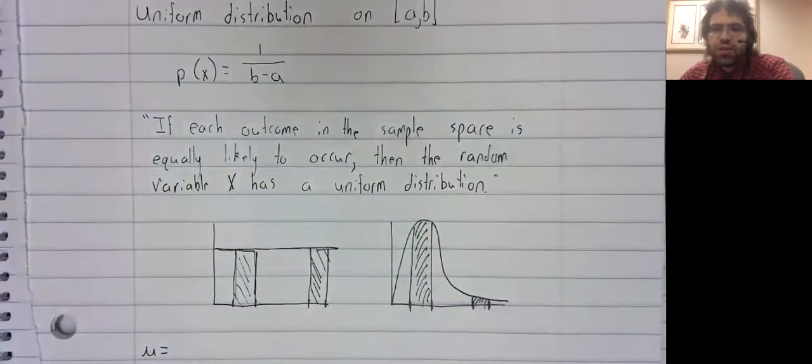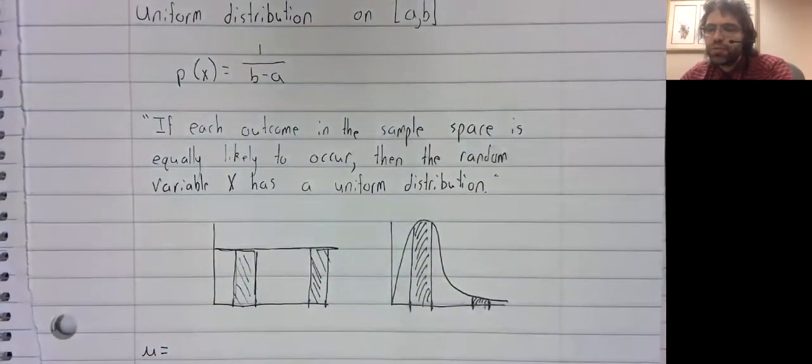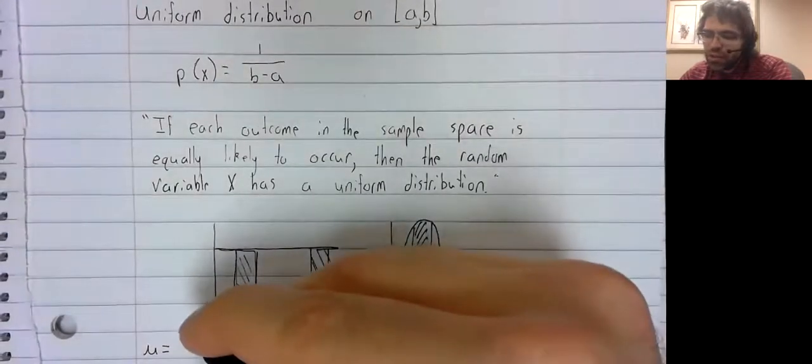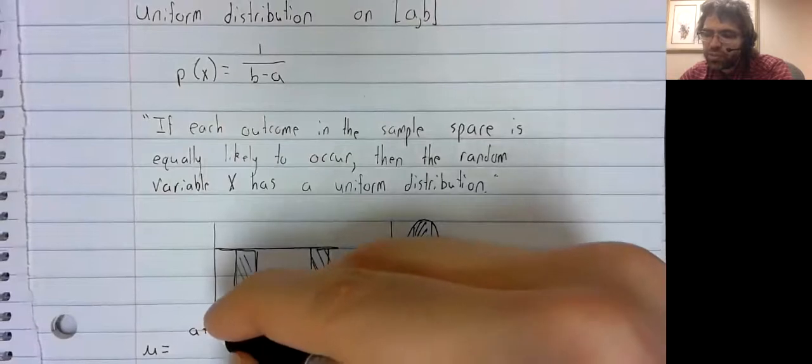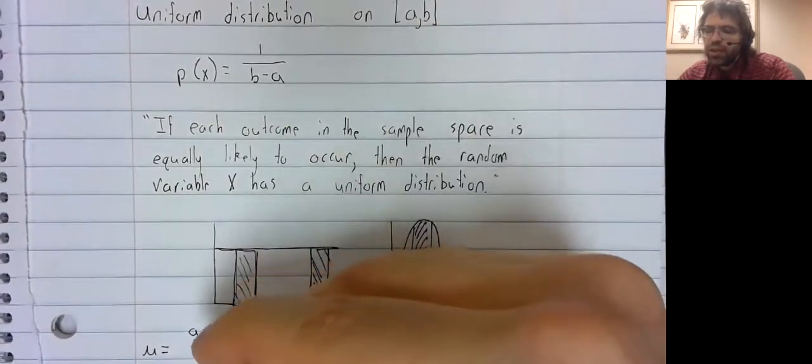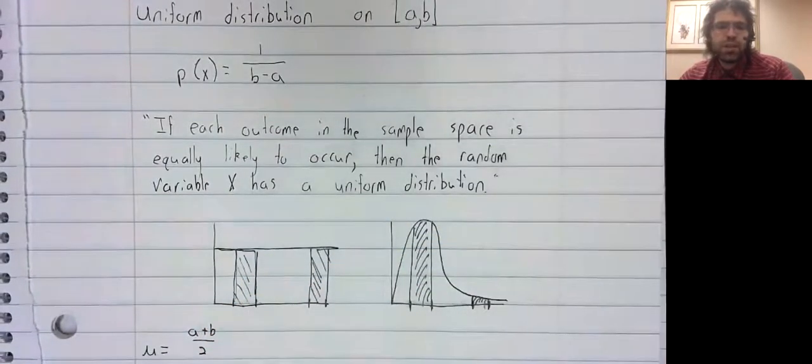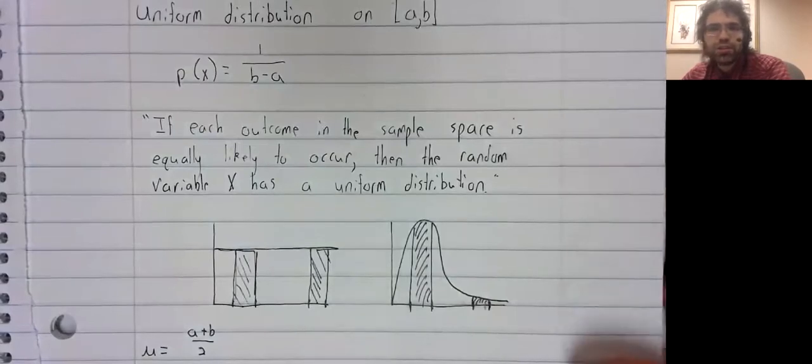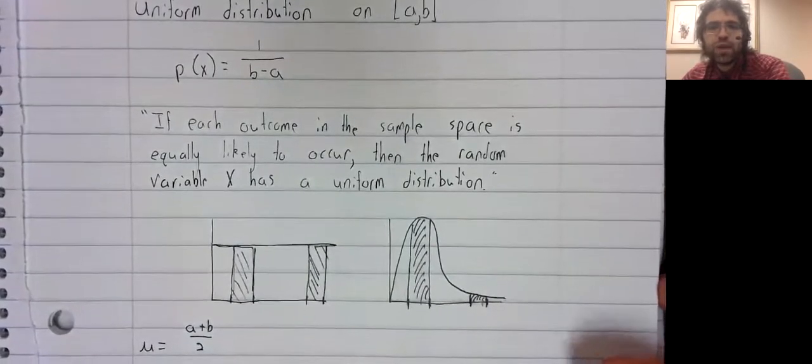The mean of the uniform distribution is the average of the endpoints: A plus B divided by two. The standard deviation and the variance are a lot less intuitive.